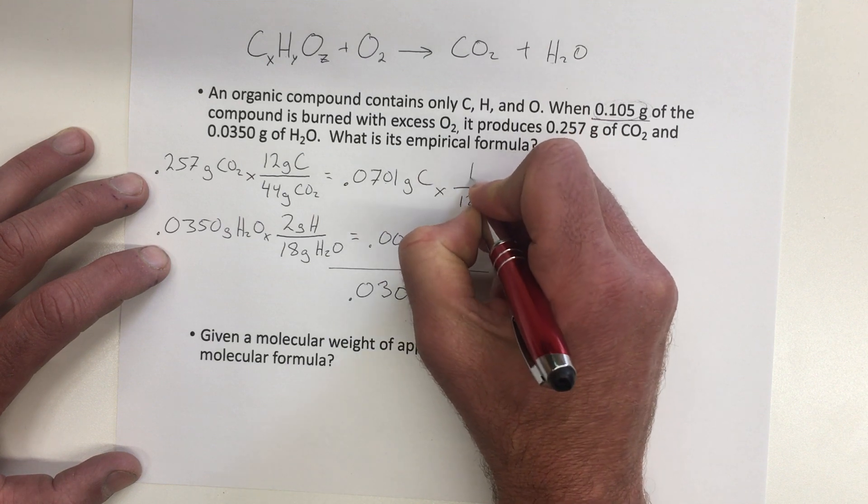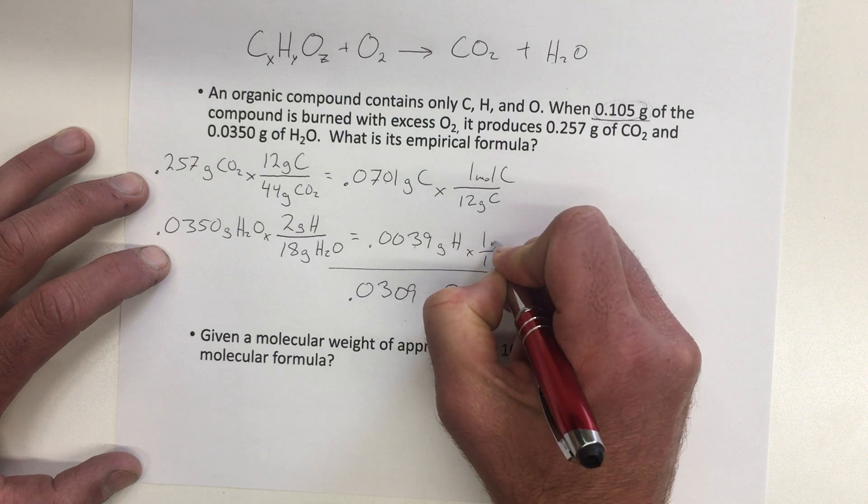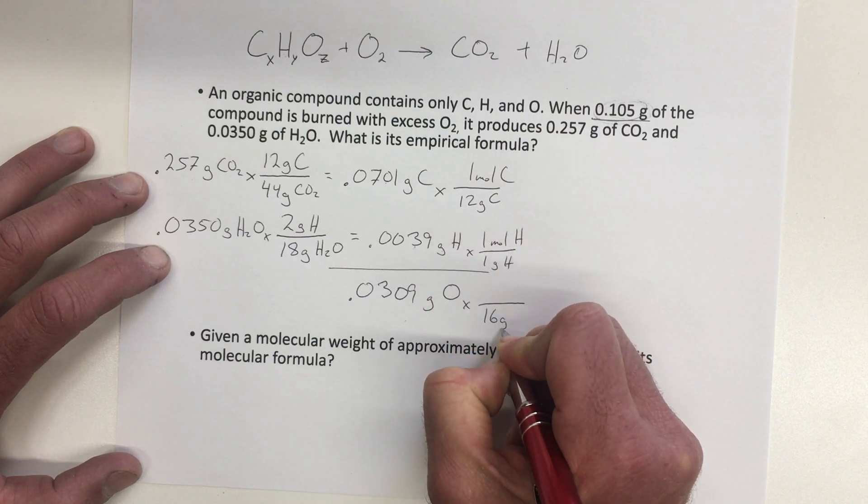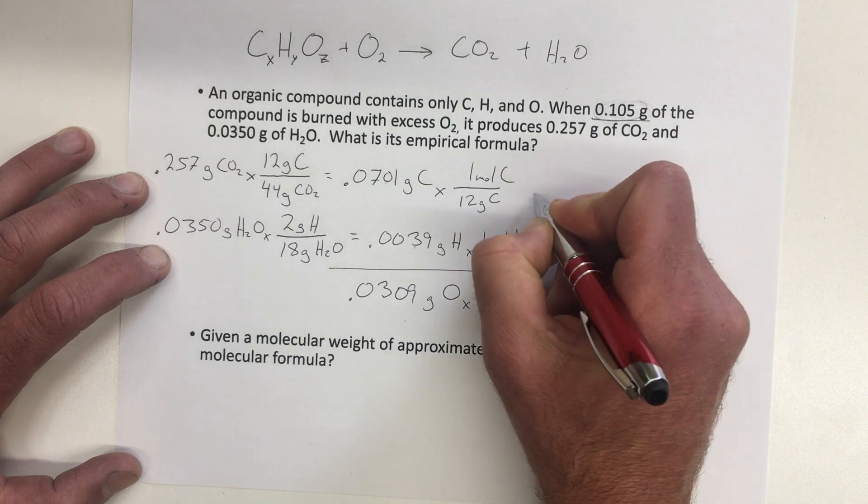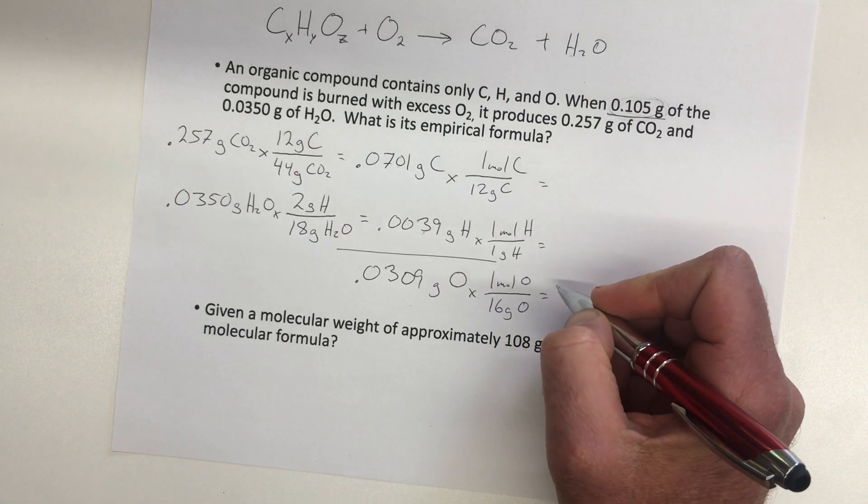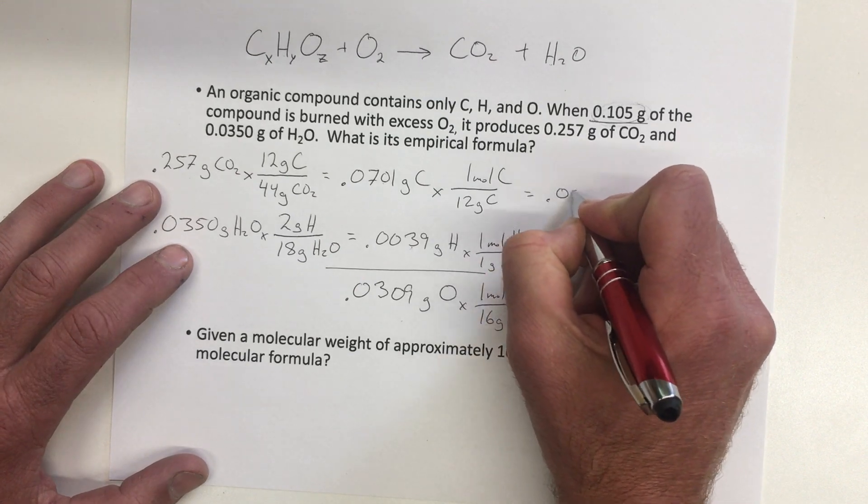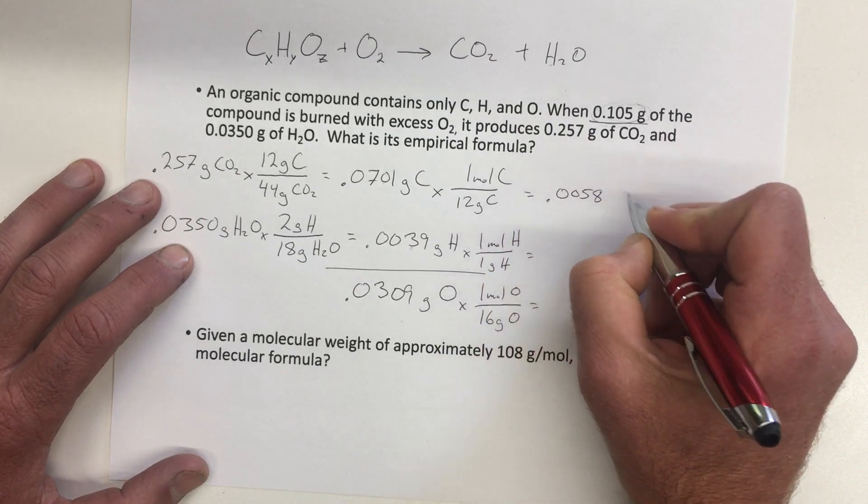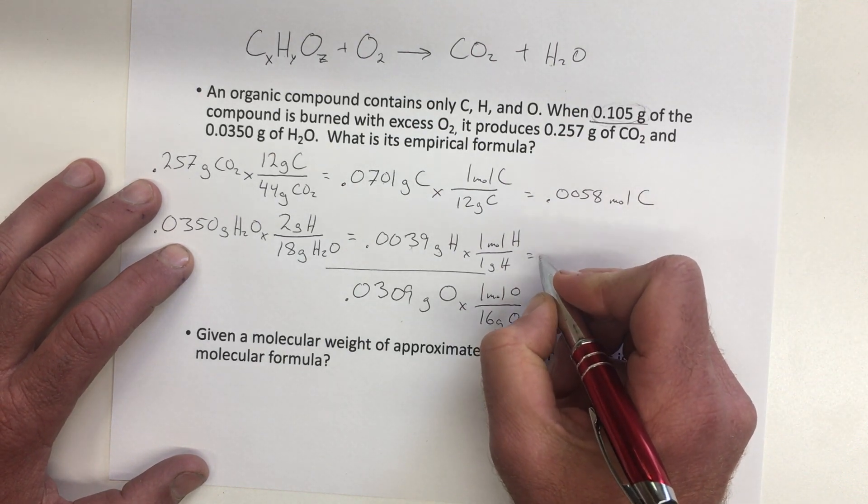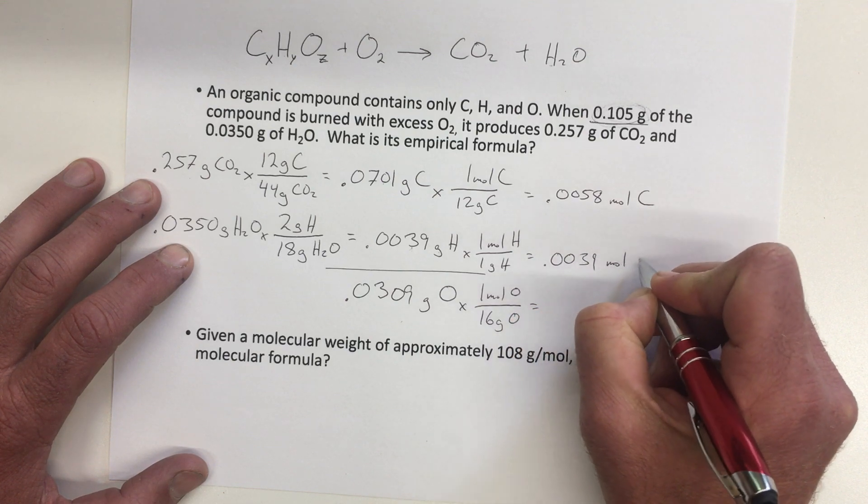So 12 grams of carbon per mole, 1 gram of hydrogen per mole, and 16 grams of oxygen per mole of oxygen. And when we do that, we're getting 0.0058 moles of carbon, and we're going to get 0.0039 moles of hydrogen.